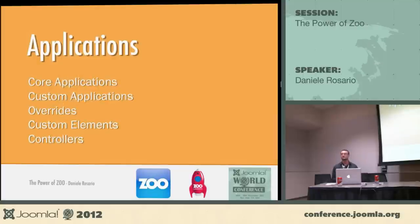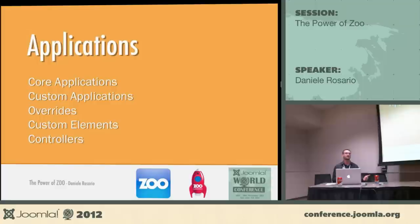The free version of Zoo ships with two basic applications: pages manager and the blog application. The pro version adds business, directory, product catalog, cookbook, and documentation applications, among others. You can build your own apps even if you're not a developer — you just need to know HTML and CSS. If you are a developer, you can do much more, but the basics require no coding skills.